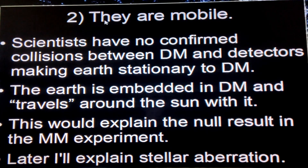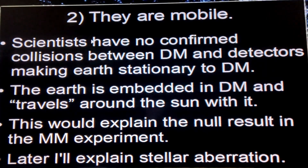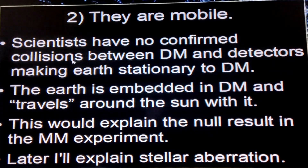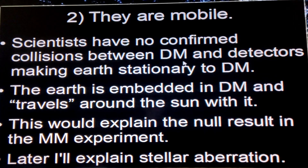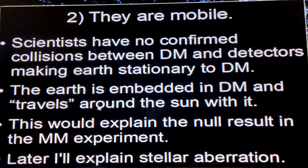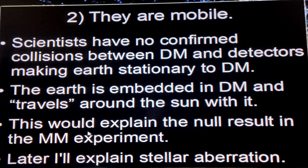The mobility of dark matter creates a problem: if it moves, you should be able to detect it. But so far scientists have found no confirmed collisions between dark matter and whatever detectors they've deployed. This means the earth is pretty much stationary compared to dark matter — the earth is probably embedded in dark matter and travels around the sun with it, which would explain the null result in the Michelson-Morley experiment.